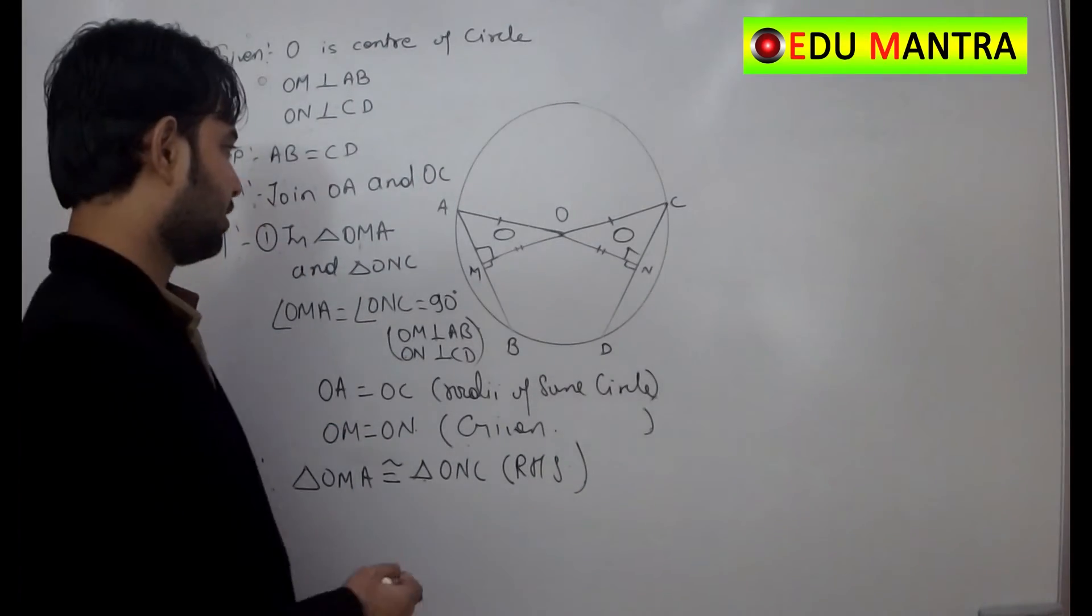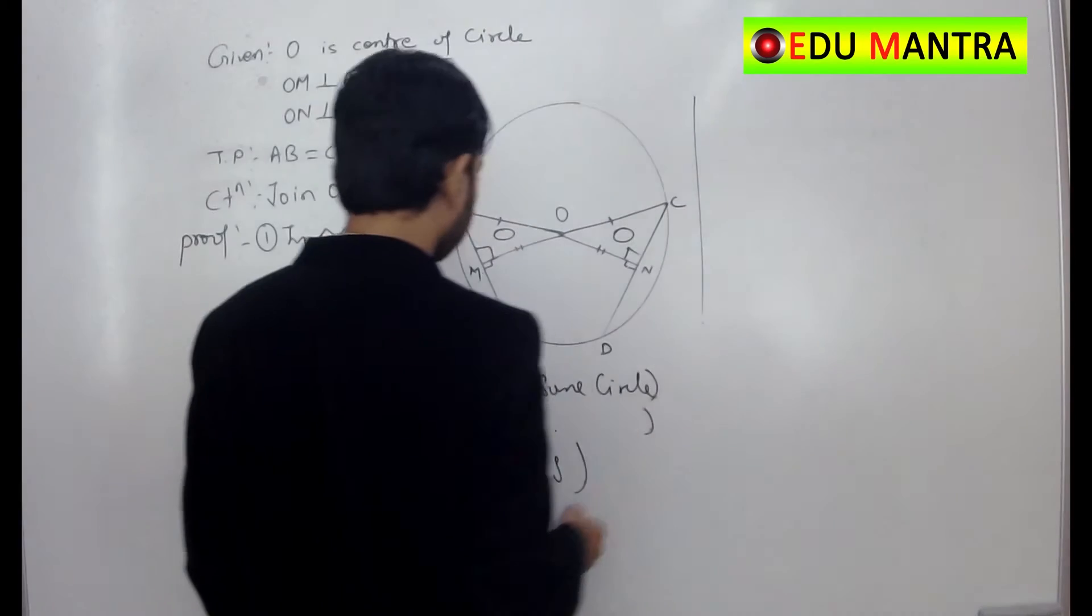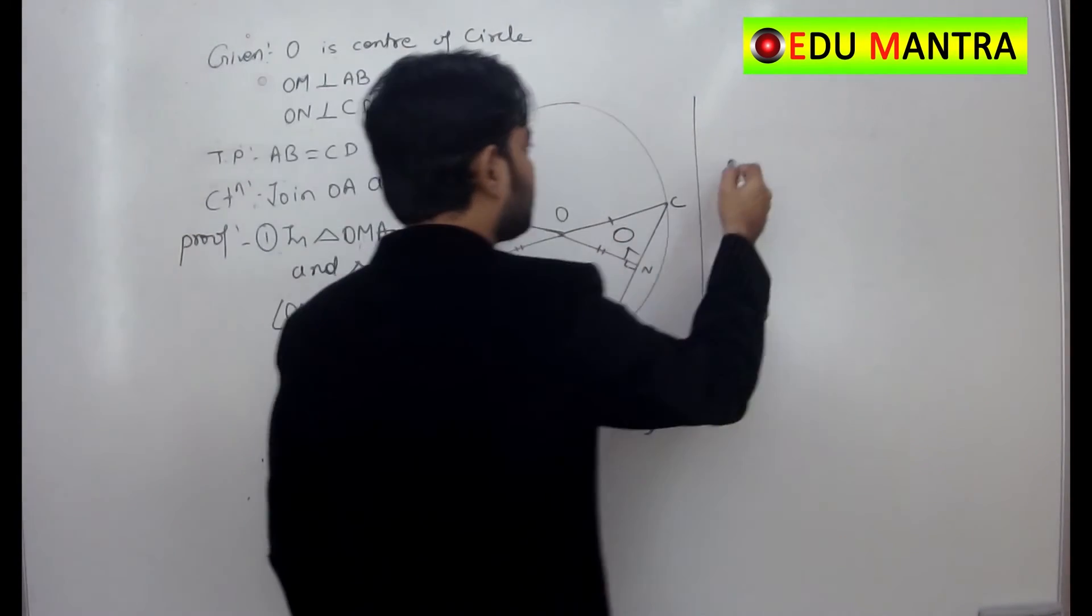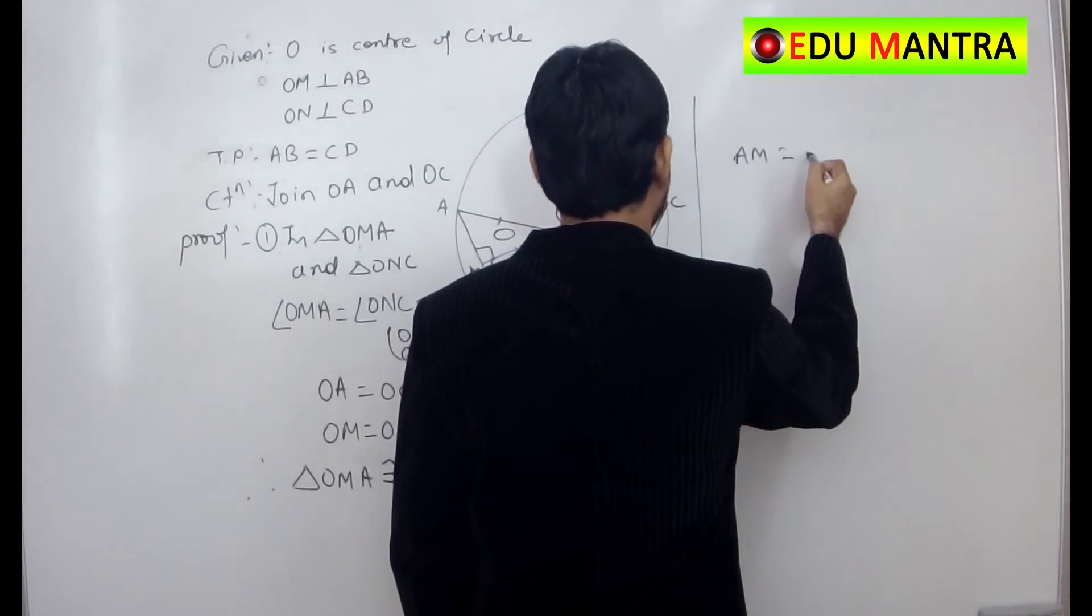corresponding parts are equal. That is why AM is equal to CN.